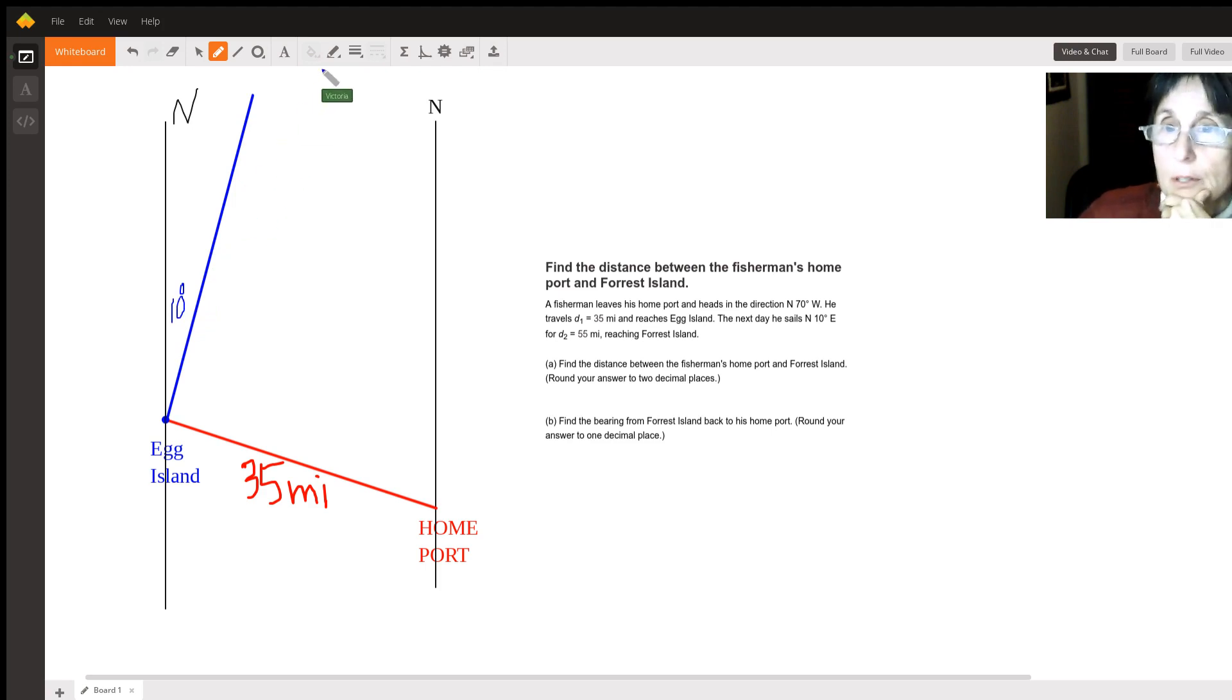If I was going to draw an east-west line, it would be right through here and it would make this 90 minus 10 is 80 degrees.